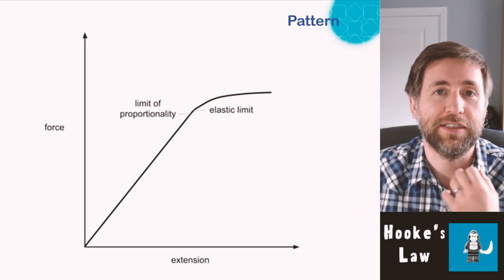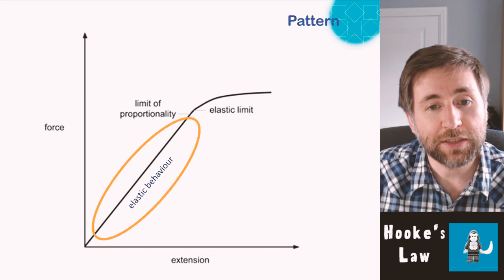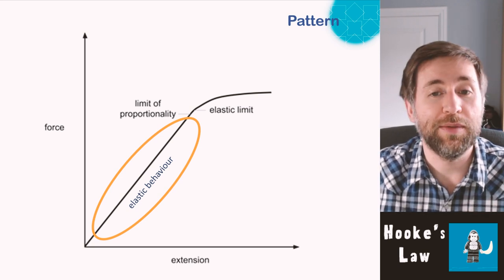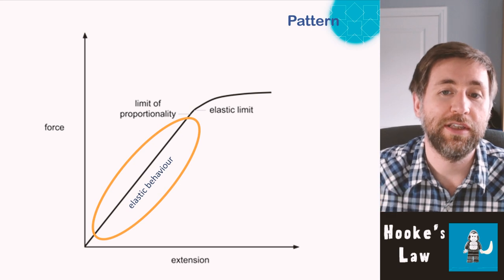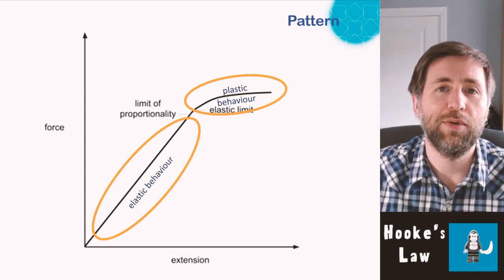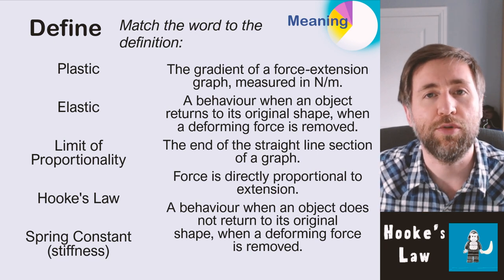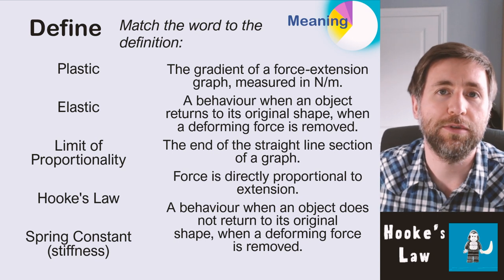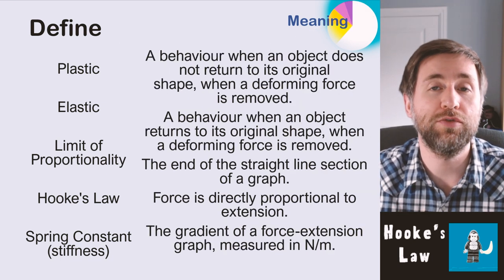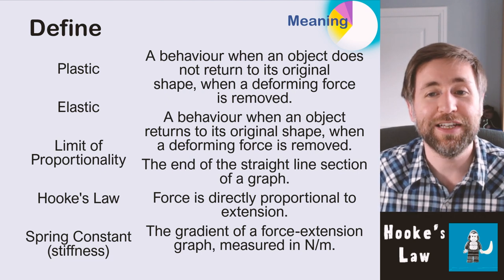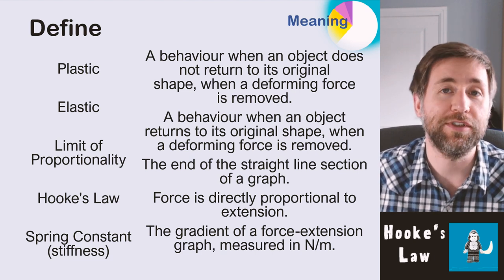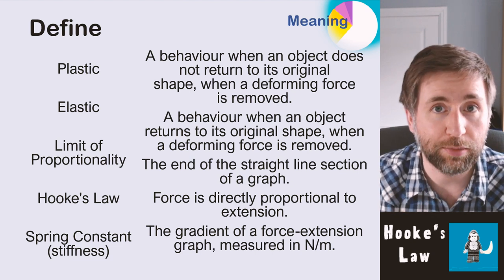Your results should look something like this: force on the y-axis, extension on the x-axis. You have a straight-line section — the proportional section — where the spring shows elastic behaviour. Then you get the limit of proportionality at the end of the straight-line section, and just after that the elastic limit, where it stops behaving elastically and starts behaving plastically.